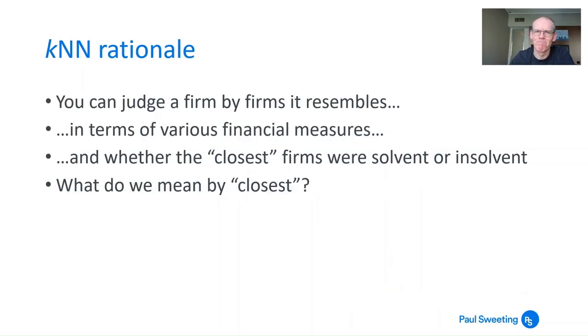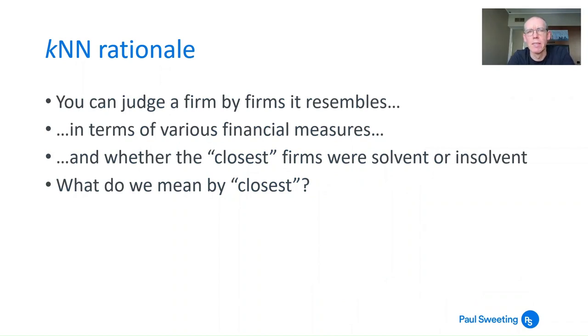So k-nearest neighbor: the rationale behind it is we're trying to find out what a firm is like, and the theory is that you can judge a firm by the firms that it resembles—meaning is similar to in terms of various financial measures. In the context of credit risk, you're asking: are the closest firms solvent or insolvent? If you had firms like this, did they go bust or not? The challenge here is what do we mean by closest, and that's really the heart of KNN—trying to define what closeness means.